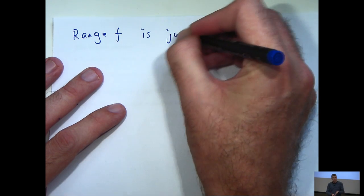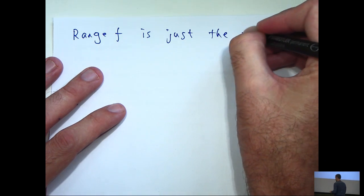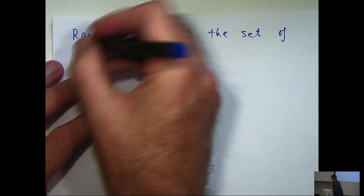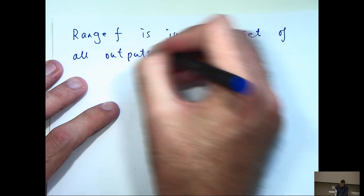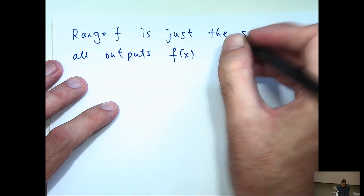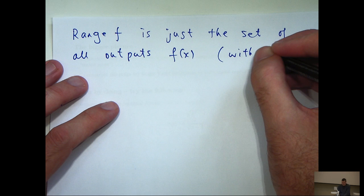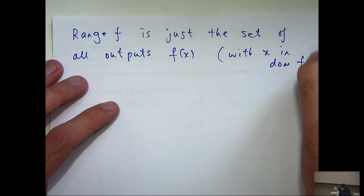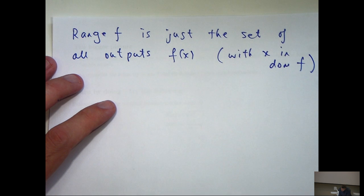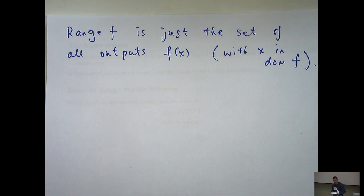f of x is just the set of all outputs f of x, where we assume, of course, the x points come from the domain of f.